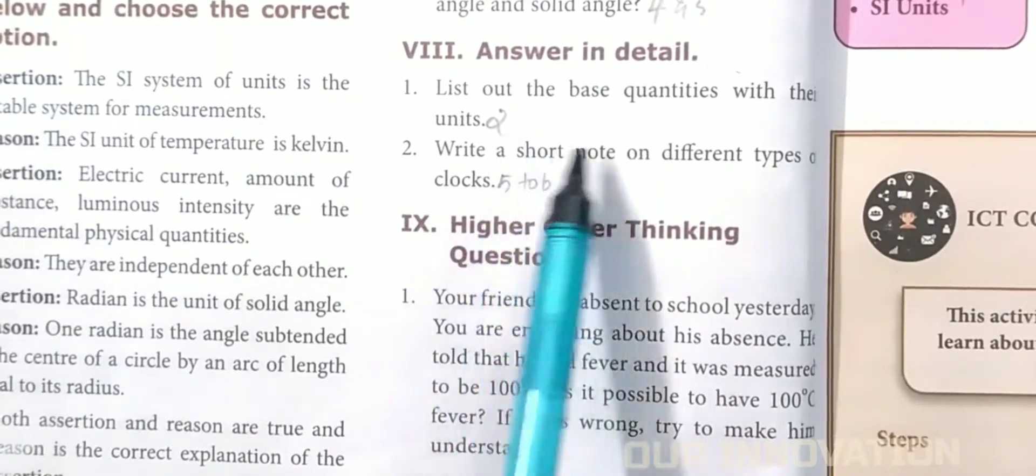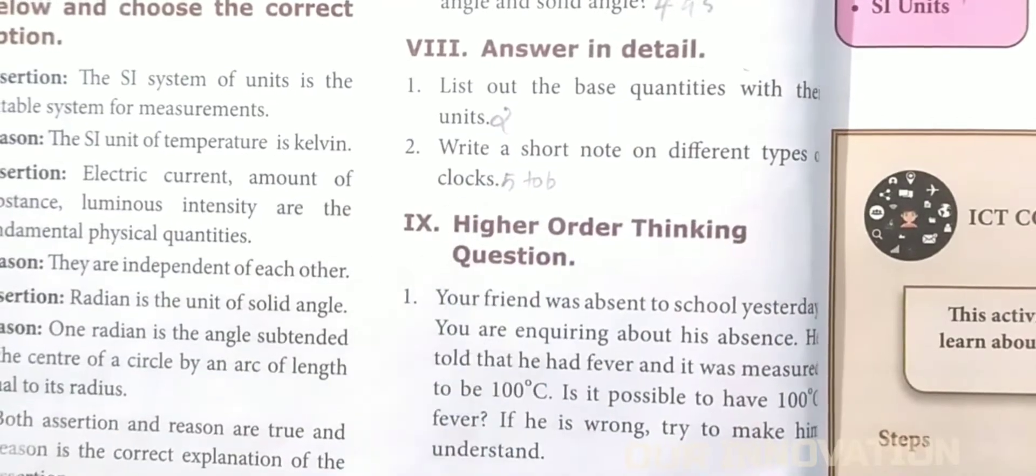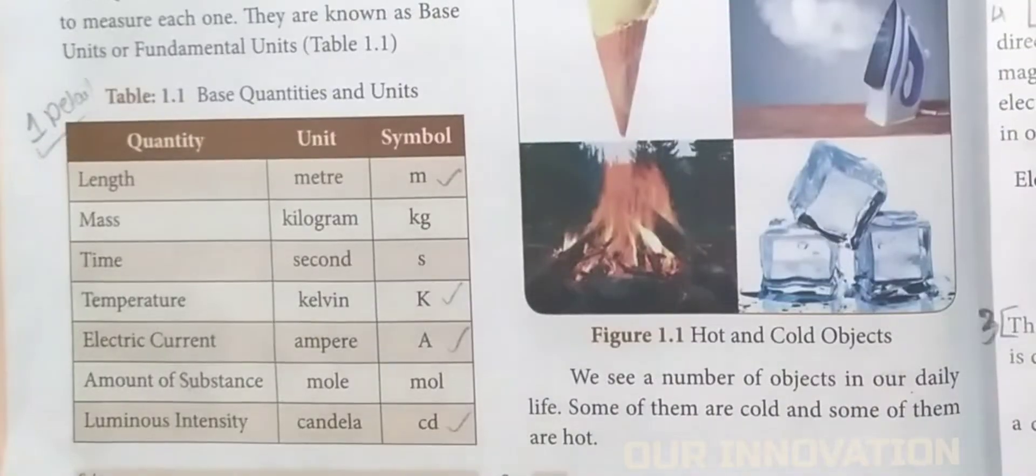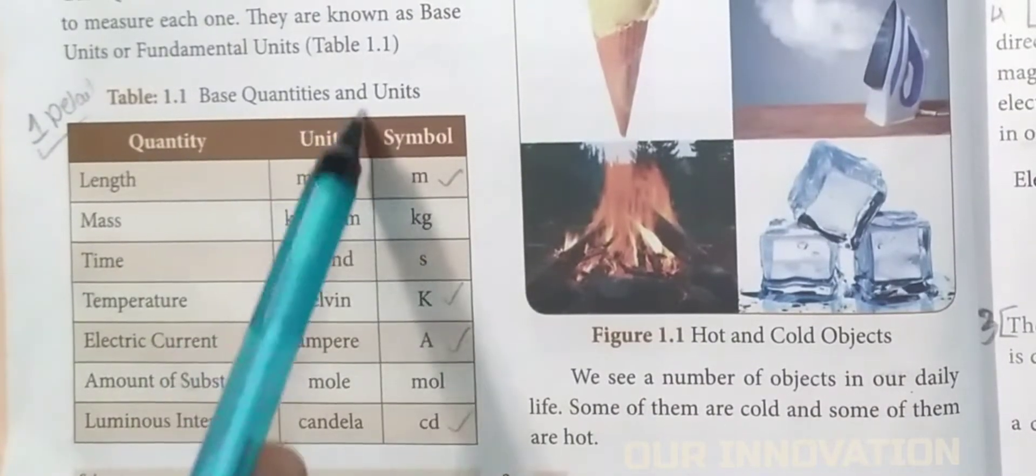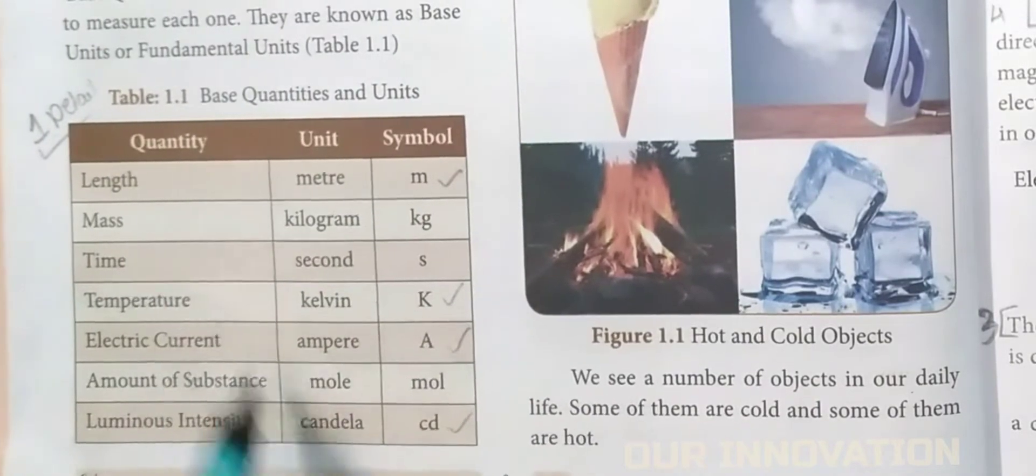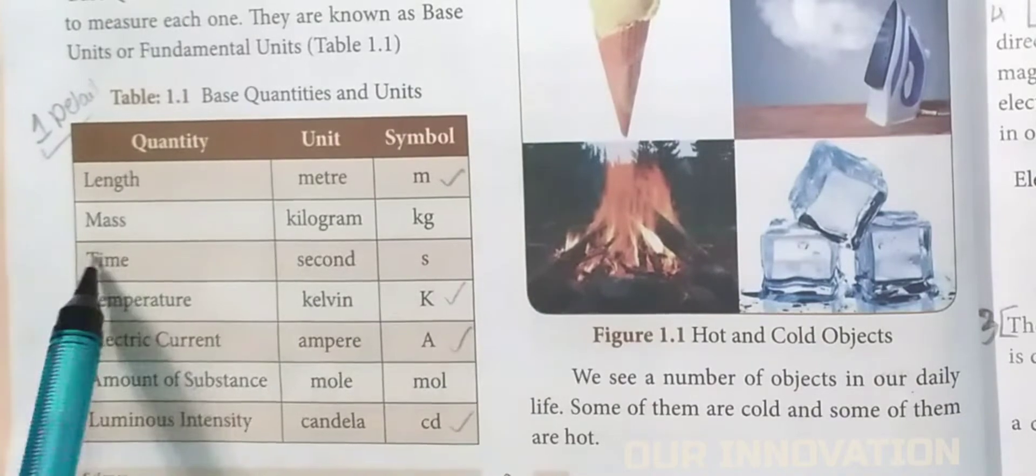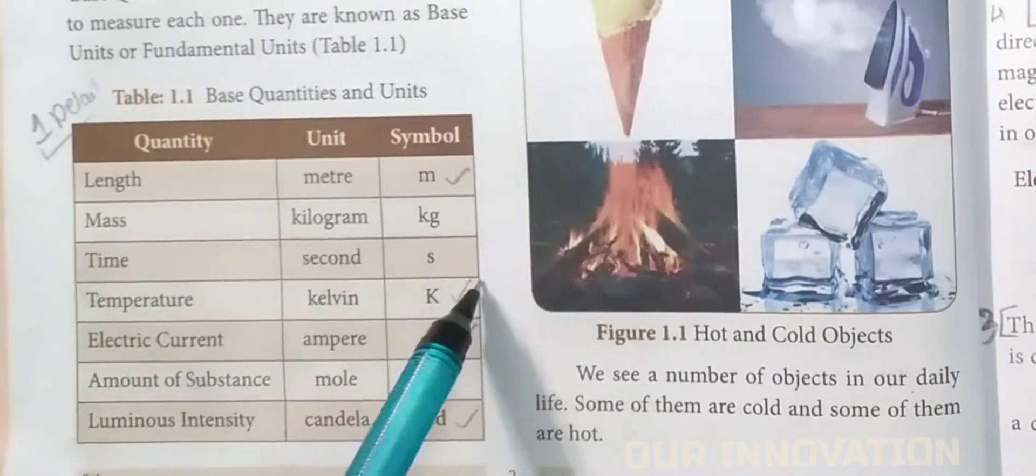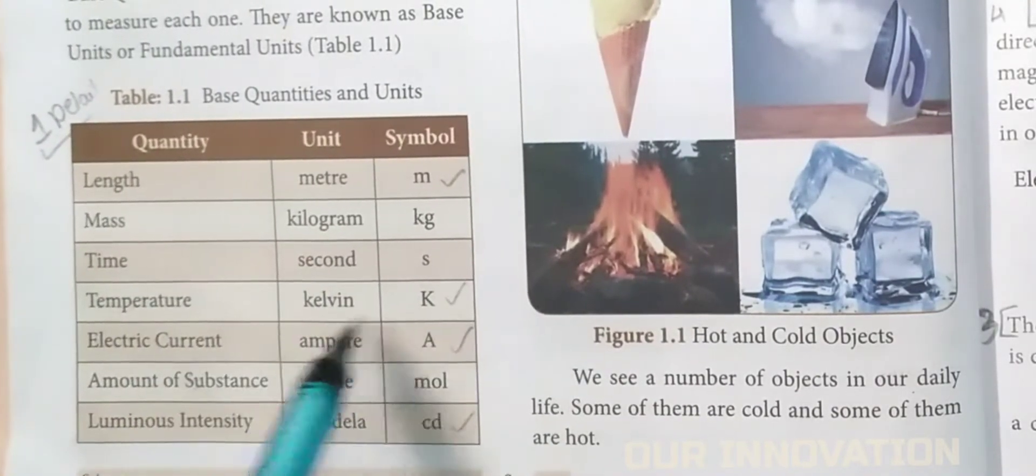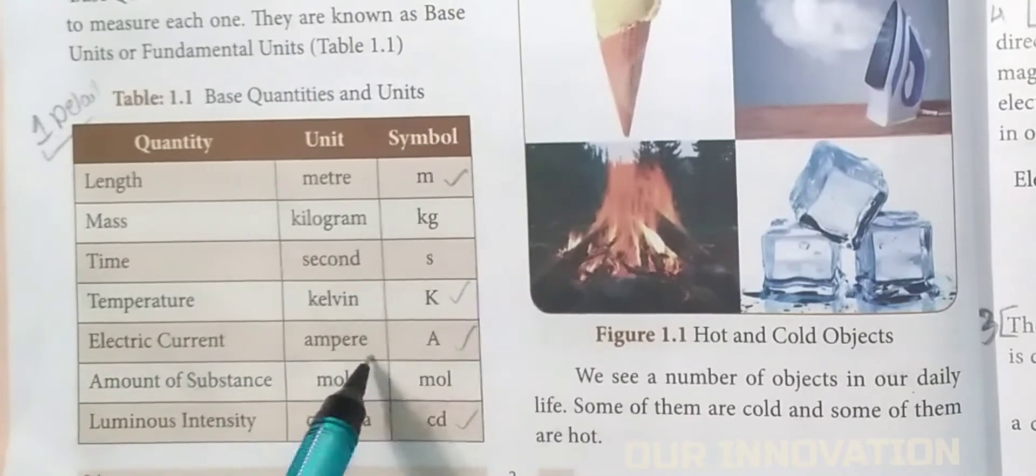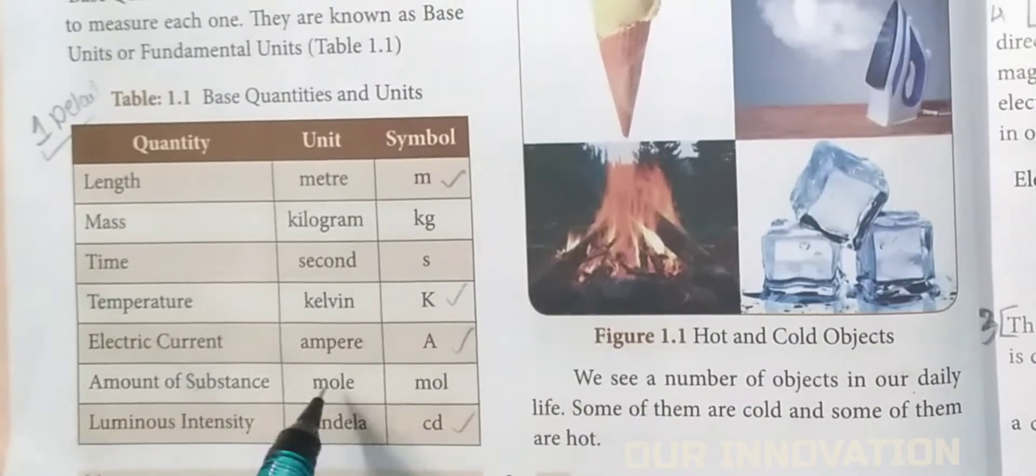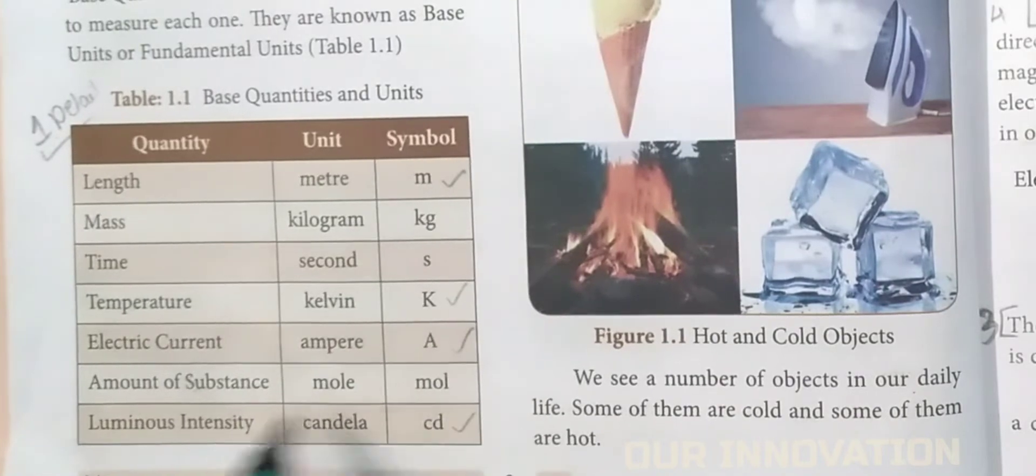Answer in detail: List out the base quantities with their units. Page number 2: See here the table column is given. Length - meter (m), mass - kilogram (kg), time - second (s), temperature - kelvin (K), electric current - ampere (A), amount of substance - mole (mol), luminous intensity - candela (cd).